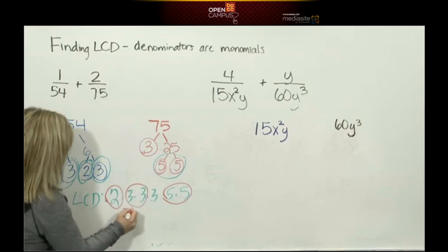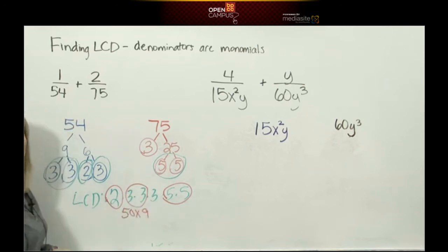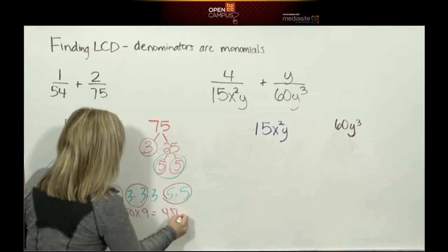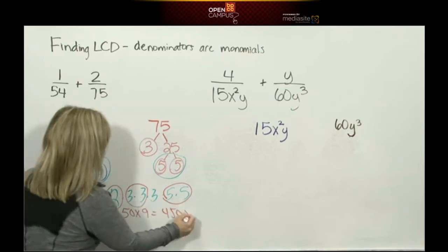So now I have 50 times 9, which I could still do in my head. I know 5 times 9 is 45, so 50 times 9 is 450. And then I gotta multiply 450 by this last 3.